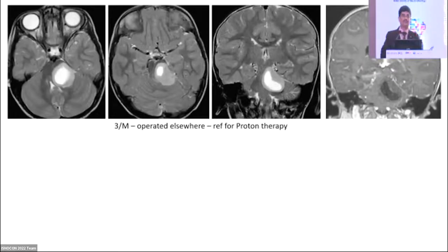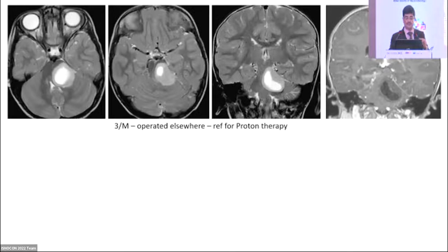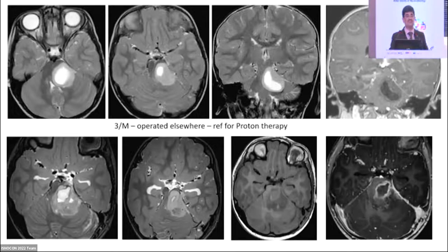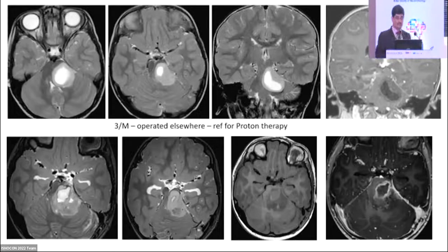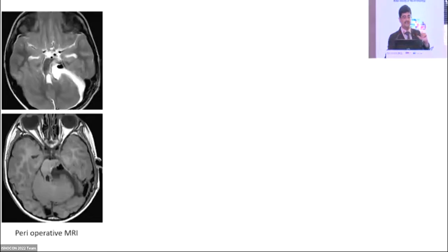The strategy for residual disease is challenging — in high-volume oncology centers, patients are referred for radiation with significant residual disease. Convincing the family to go for another surgery is more challenging than the technical removal, especially in the private sector. This three-year-old was operated in the Middle East and referred for proton therapy. On planning MRI, we found significant residual disease, actually increased compared to pre-op. We convinced the family for second-look surgery using a retrosigmoid approach, achieving complete removal.